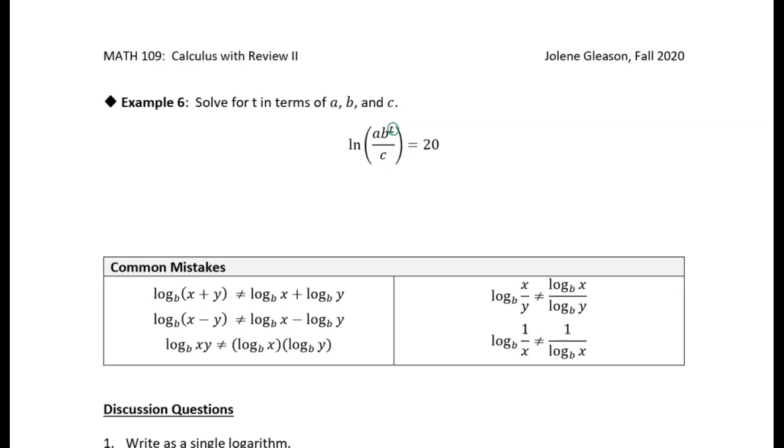All right, so I'm seeing the natural log of a quotient. So let's first of all apply the quotient property. And we'll break that up, and so we get the natural log of what? The numerator is ab to the t minus the denominator, so natural log of c is equal to 20.